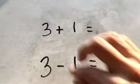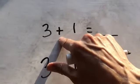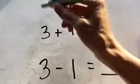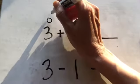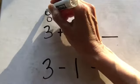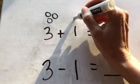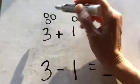So the numbers are the same, but the sign changes what we do. So let's look at the top one. If it's a plus sign, we're going to take three plus one. That means we add them together, count them all up. So we have one, two, three, plus one more.